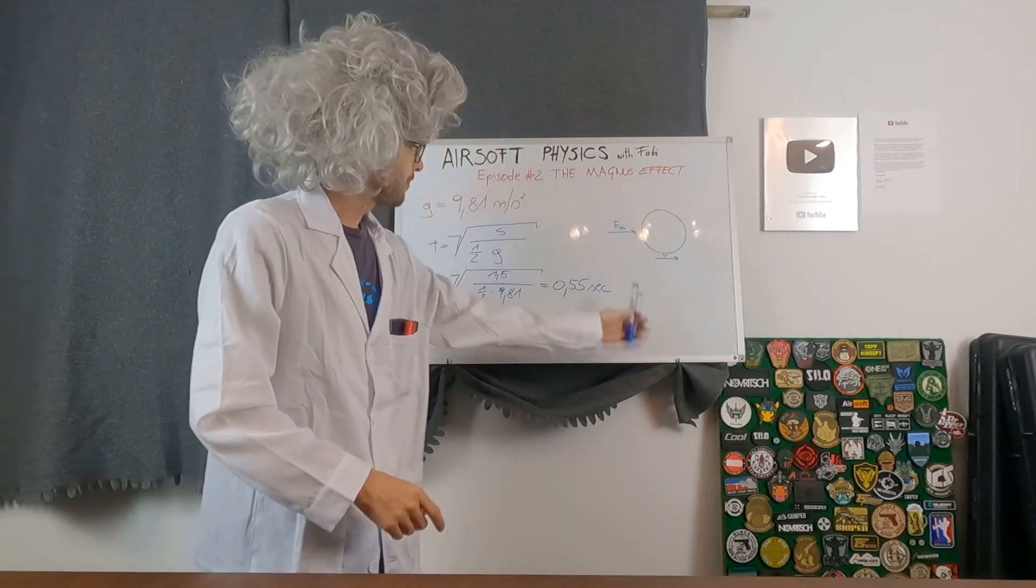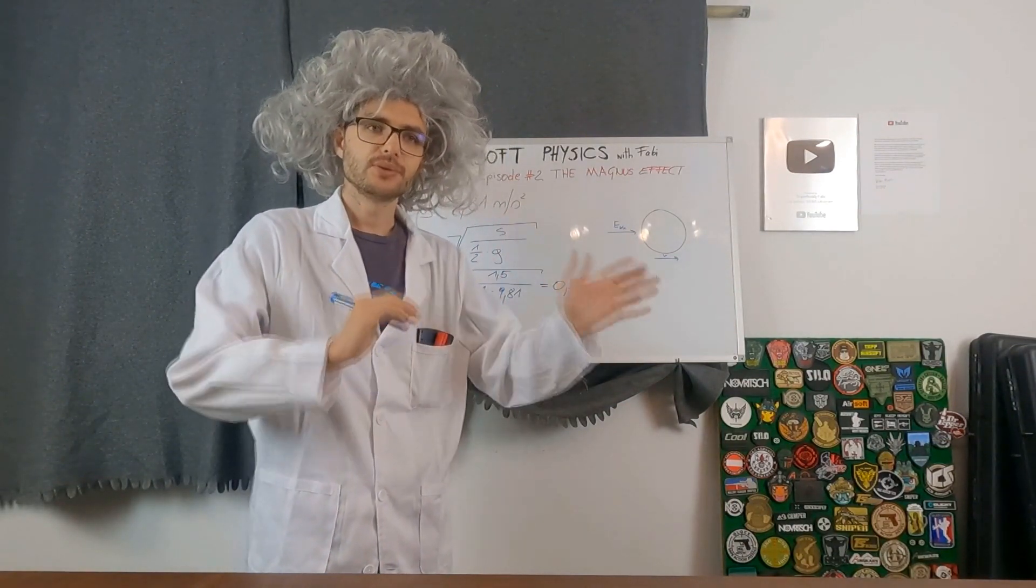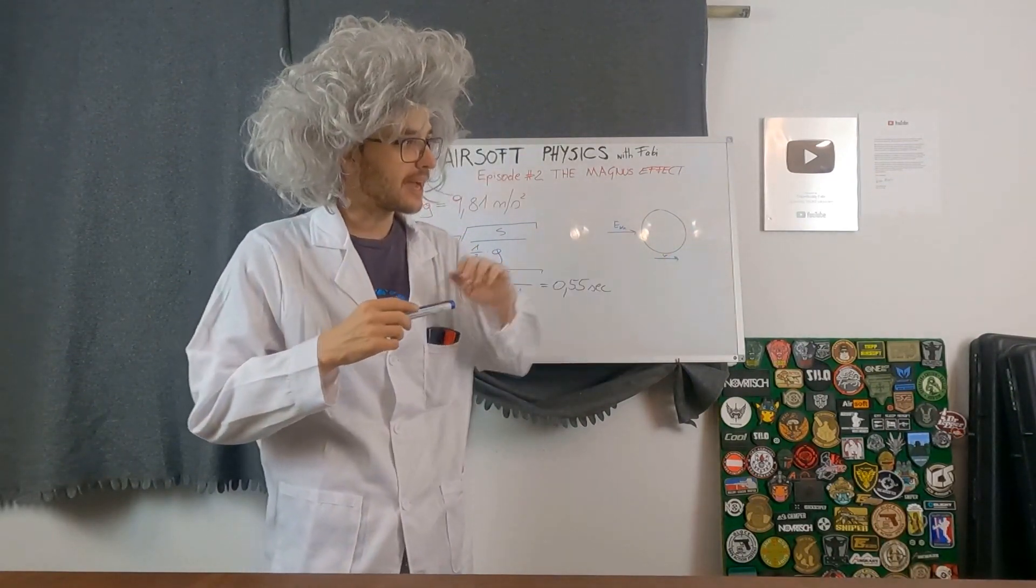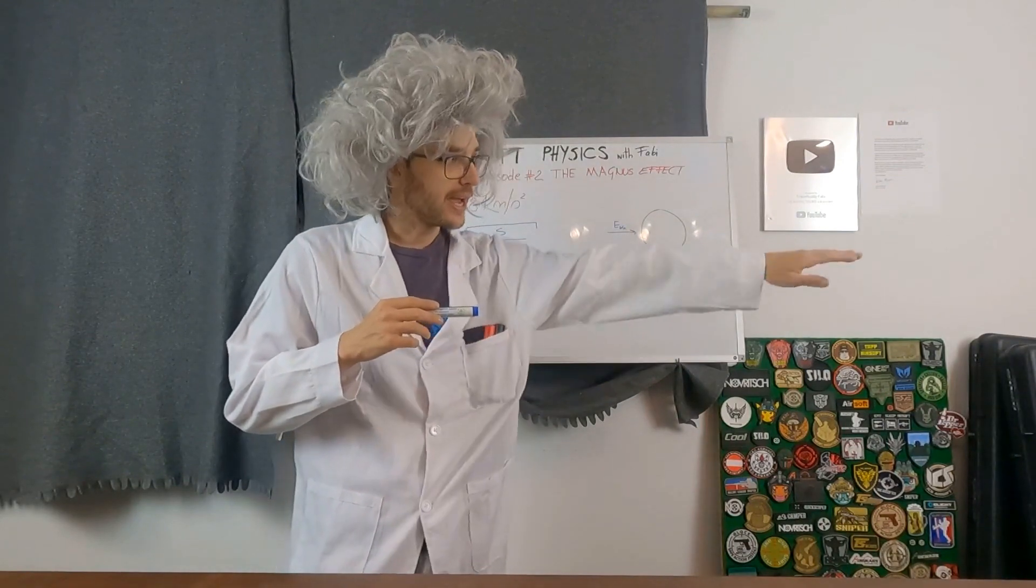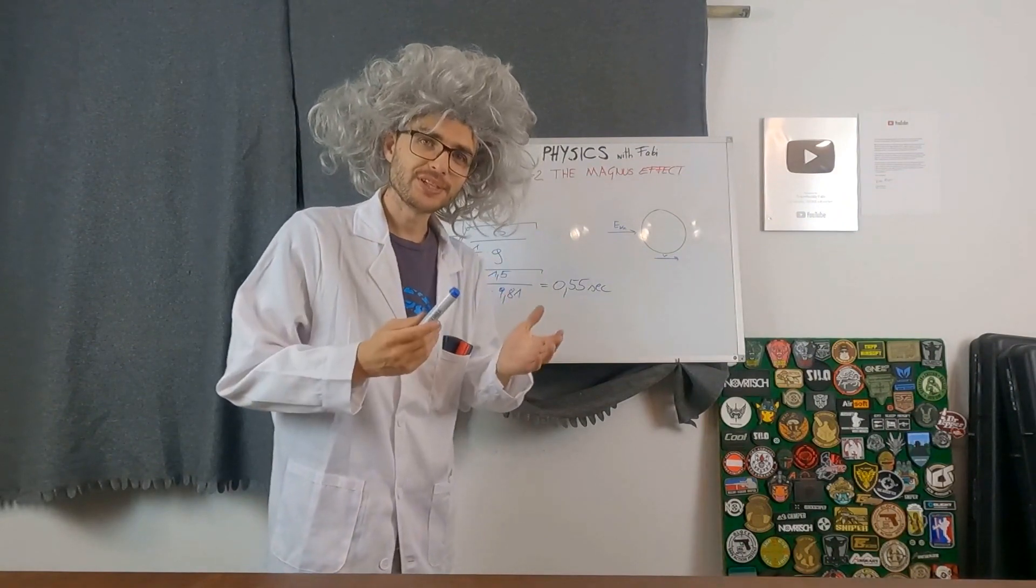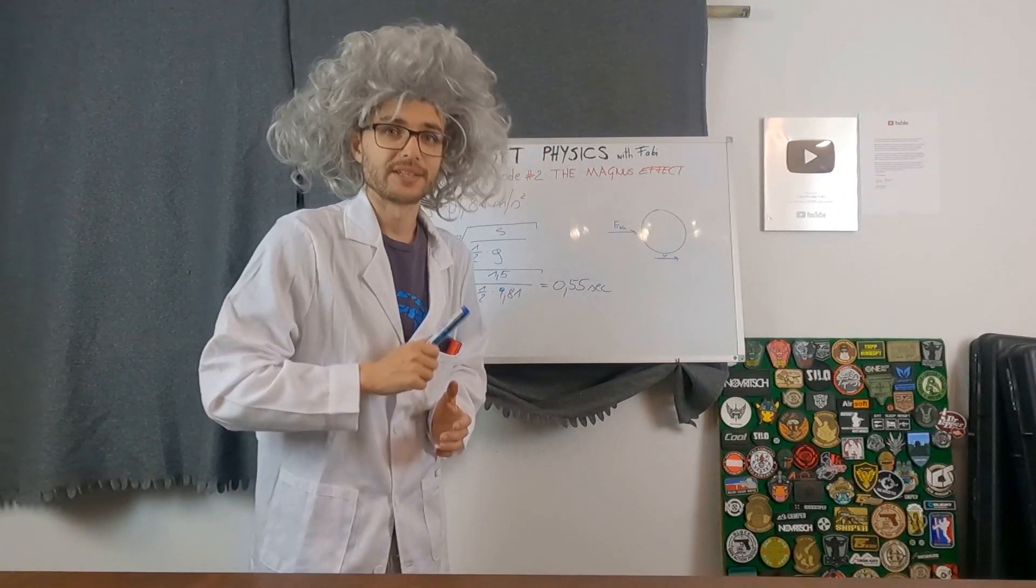Now that we know a BB takes about 0.55 seconds to hit the ground, our goal is to extend this time to make the BB fly further. So what is a way to achieve that? Exactly, it is the Magnus effect.